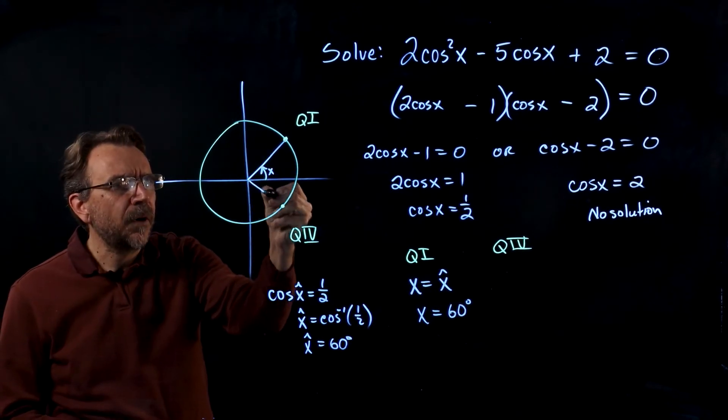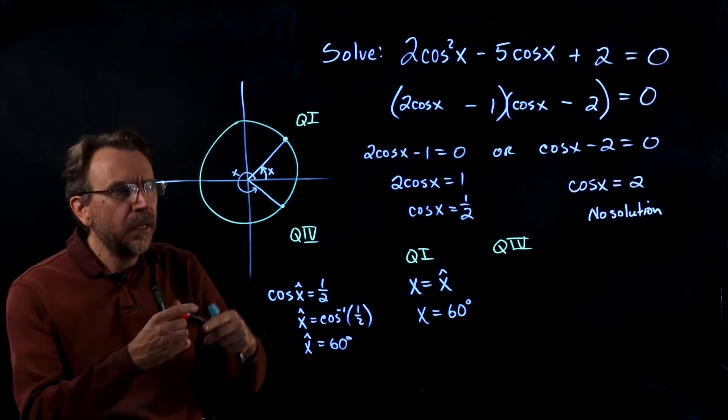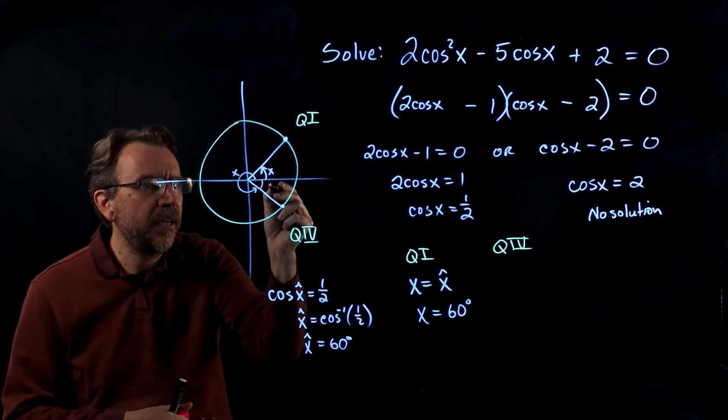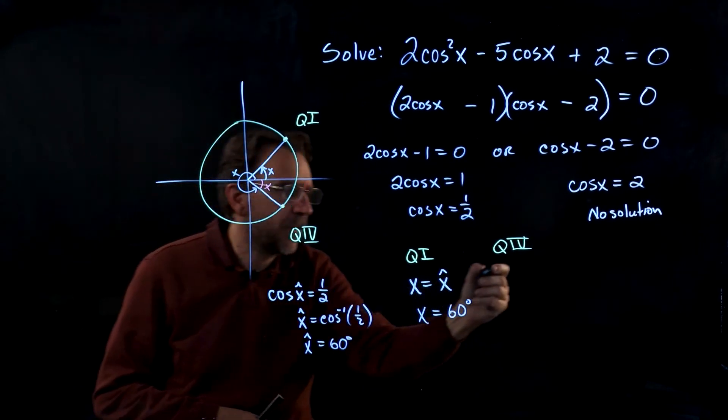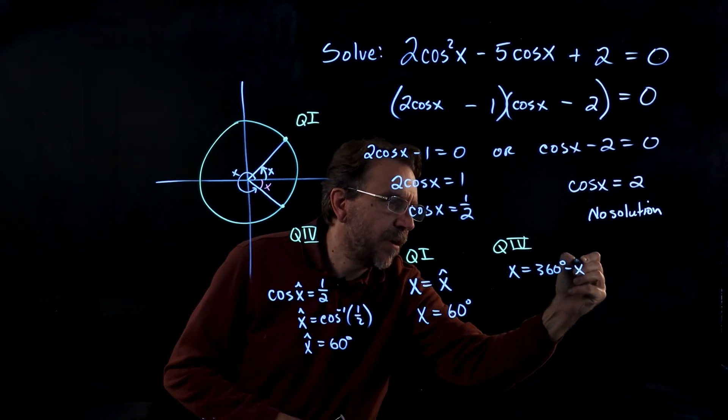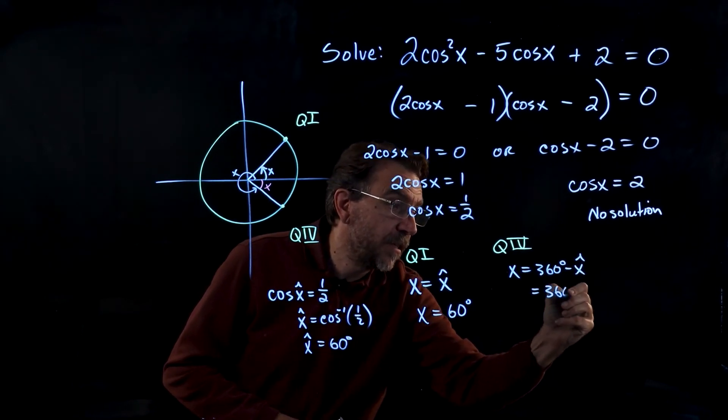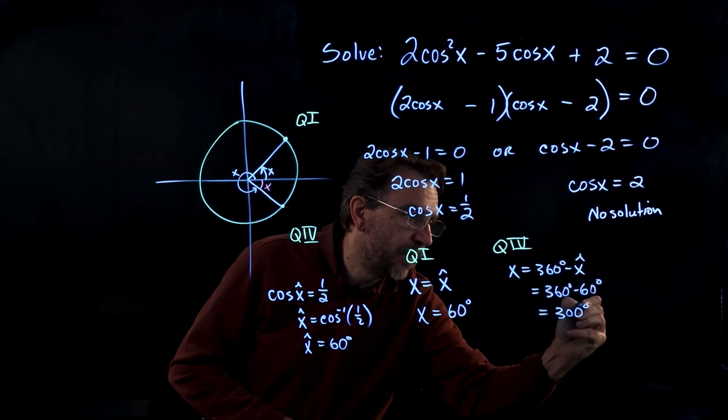In q4, we have to look at this angle here is x. The reference angle that they gave us is right here. So we're going to take 360 degrees and subtract out the reference. So x equals 360 degrees minus the reference angle. 360 degrees minus 60 degrees in this case is 300 degrees.